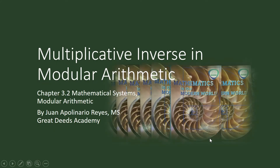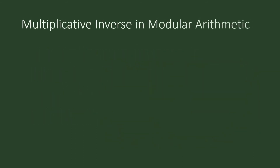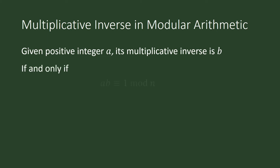Multiplicative Inverse in Modular Arithmetic. Given a positive integer a, its multiplicative inverse is b if and only if a times b is congruent to 1 modulo n.